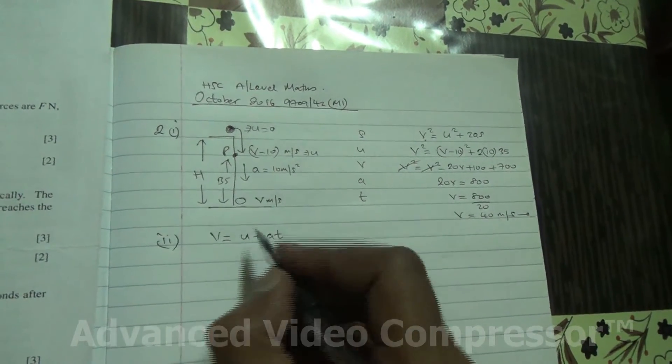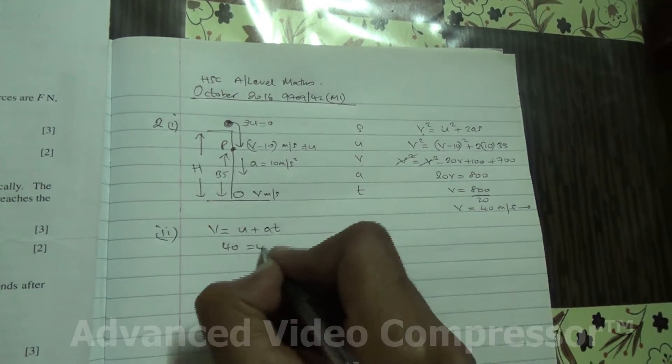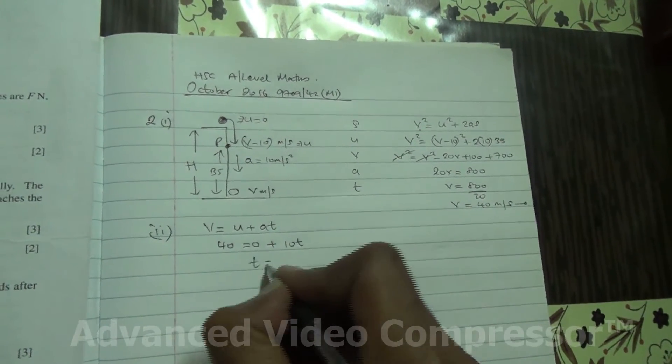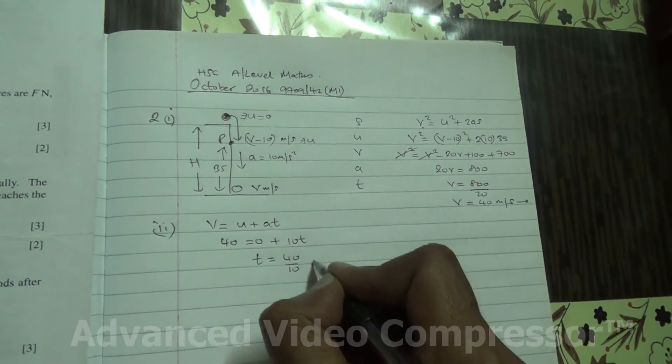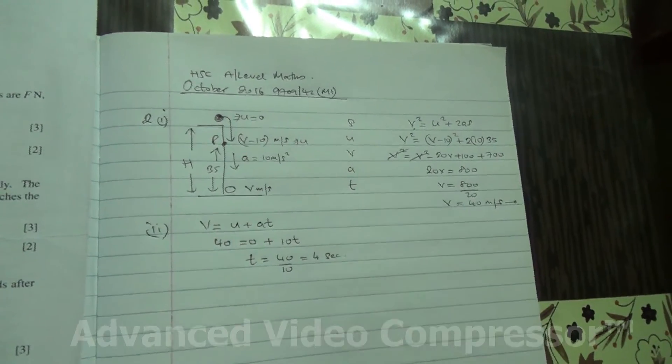So, what is v? v is being found to be 40. So, I am going to say then, 40 is equal to 0 plus 10 times t. Therefore, t is going to be 40 divided by 10, which is 4 seconds. Alright.